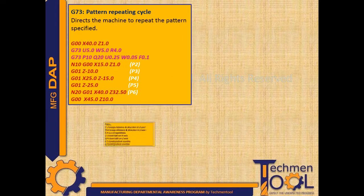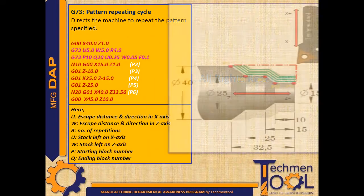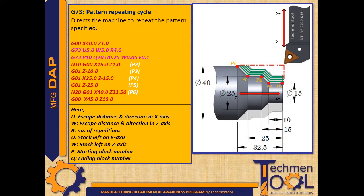G73 pattern repeating cycle. This code directs the machine to repeat the pattern specified. In the following program, after the rapid movement to position X40 Z1, the tool follows G73 pattern repeating cycle along with W, U and R values. U is the skip distance and direction in X axis, W is the skip distance and direction in Z axis, and R is the number of repetitions.